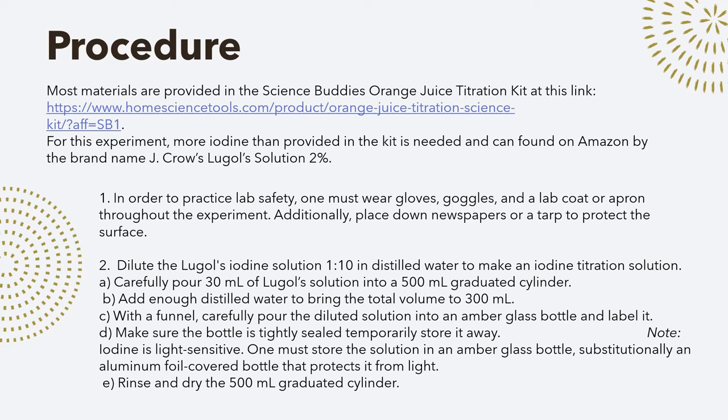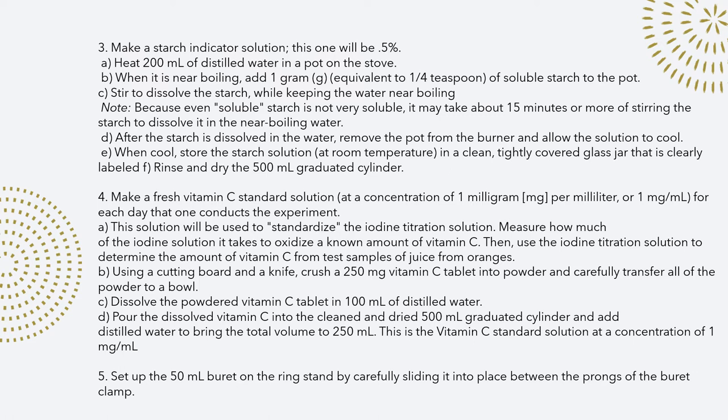Then you want to make sure that you rinse and dry everything. After I rinsed and dried everything, I started to make my starch indicator solution. I started by heating 200 milliliters of distilled water on the stove and added a fourth teaspoon of soluble starch to the pot. I had to keep stirring it for about 15 minutes because soluble starch isn't very soluble, so it did take a while.